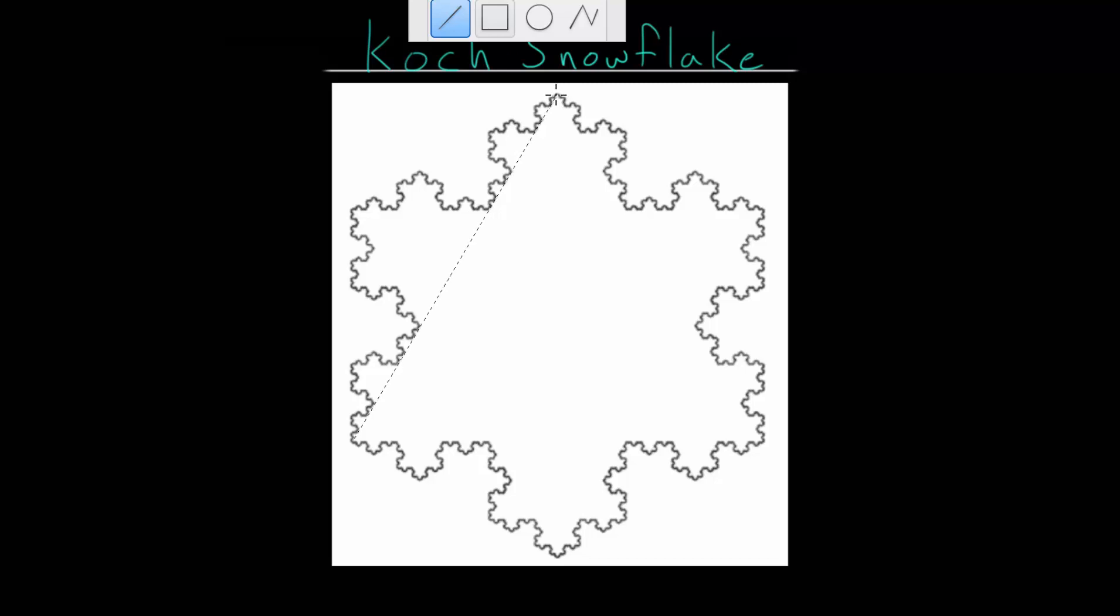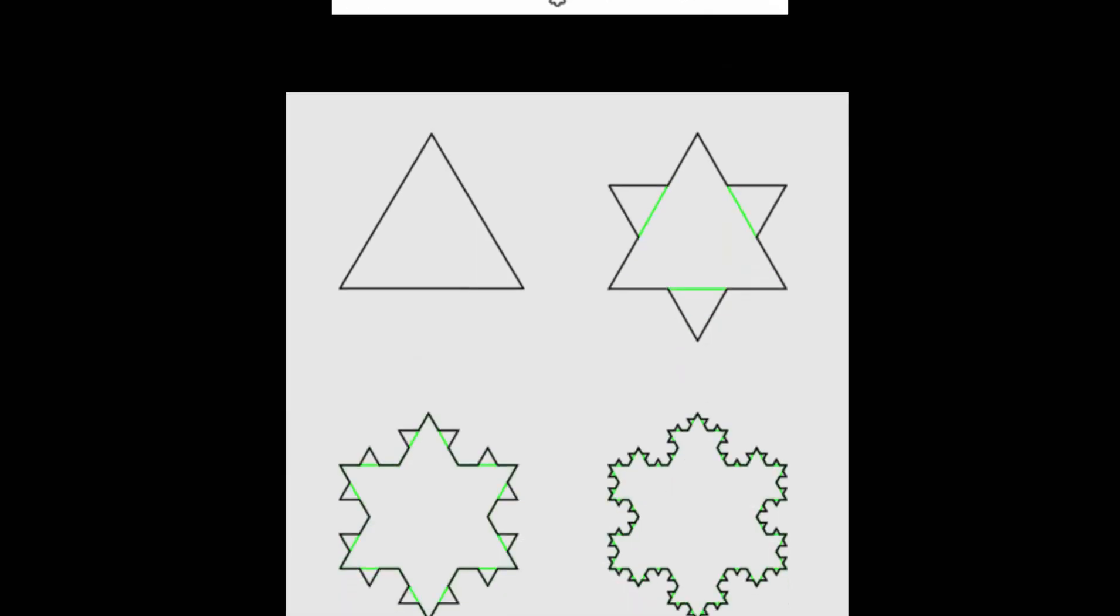You can imagine seeing that there is an equilateral triangle in the center of this. To create the snowflake, we essentially carry out a simple process, but repeat that process infinitely many times to create this final shape. Before we look at the perimeter, let's remind ourselves of what that process is.